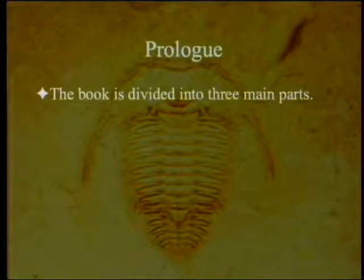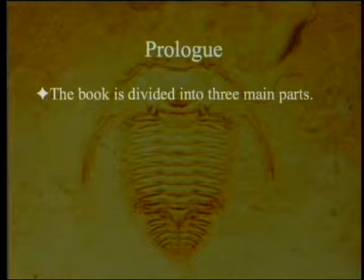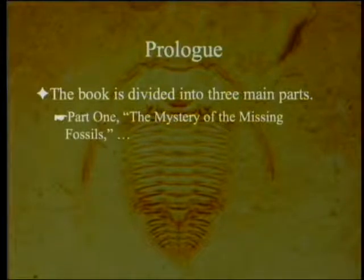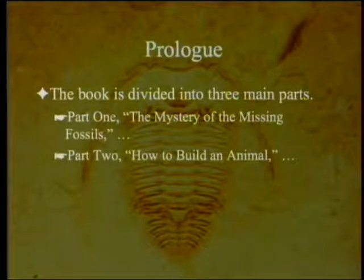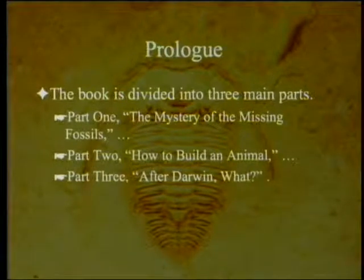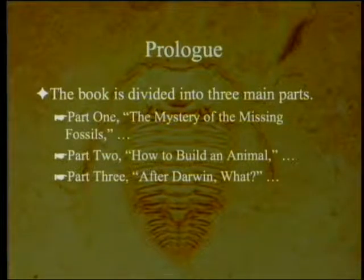In the prologue, he noted that the book is divided into three main parts. Part one is the mystery of the missing fossils, which we are currently in. Part two is how to build an animal. And then finally, part three, after Darwin — what? It looks like it will take us at least three discussion periods to go through part one.